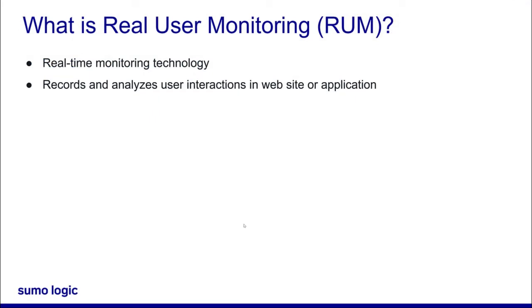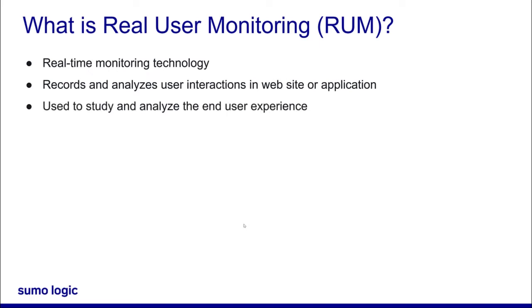RUM is a monitoring technology that records and analyzes all user transactions and interactions with a website or web application in real time. It's used to study and analyze the end user experience,